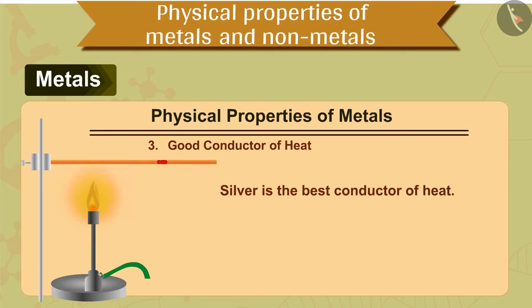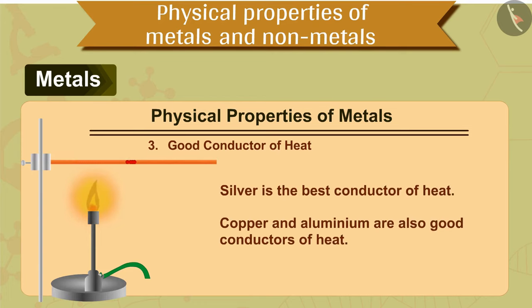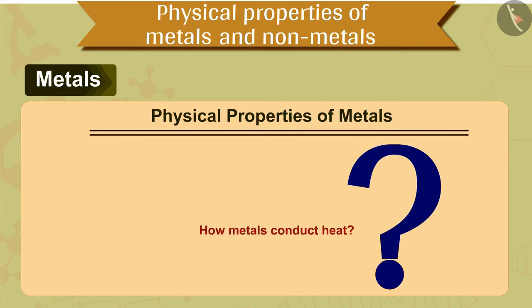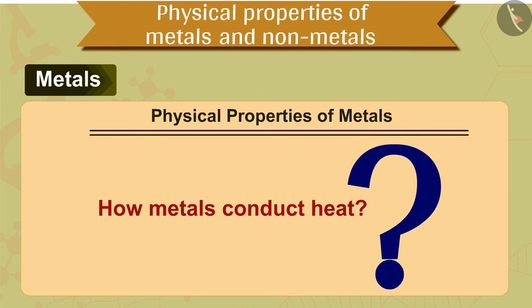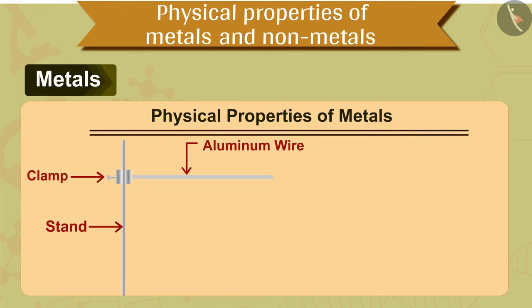The third property of metals is that metals are good conductors of heat. Silver is the best conductor of heat. Copper and aluminum are also good conductors of heat. But do you know how metals conduct heat? Let us understand this by an activity.